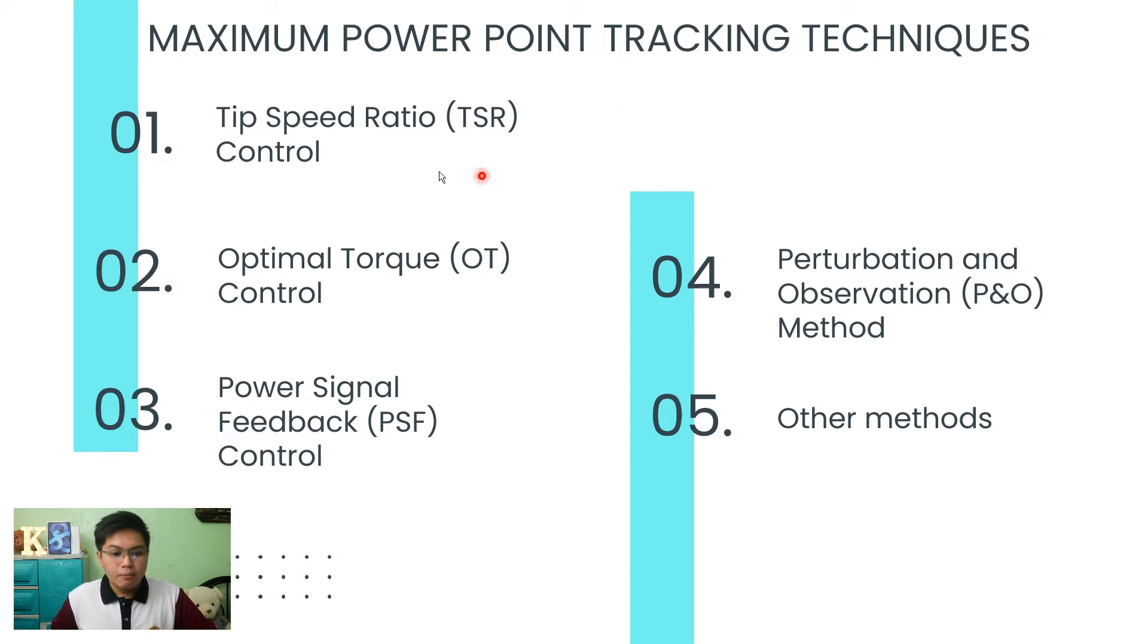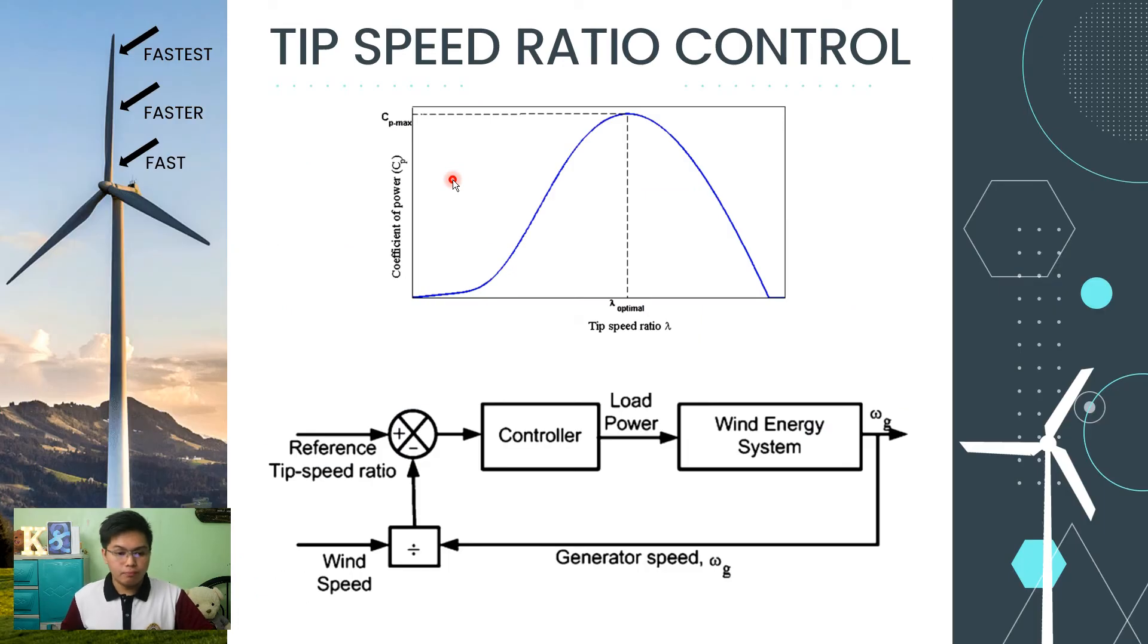In this slide is the maximum power point tracking techniques. The first one is the tip speed ratio control. Tip speed ratio refers to the ratio between the wind speed and the speed of the tips of the wind turbine blades.